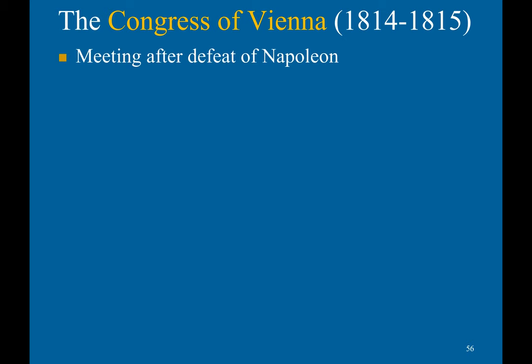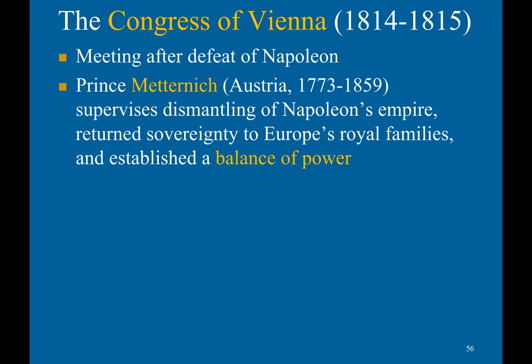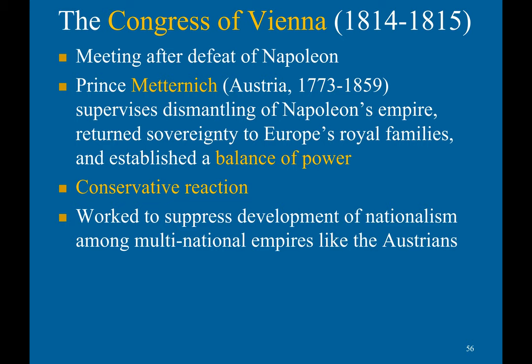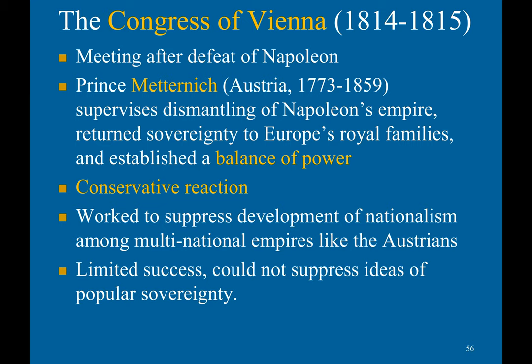The Congress of Vienna was a meeting held after the defeat of Napoleon. It was convened by Prince Metternich, who supervised the dismantling of Napoleon's empire, returned sovereignty to Europe's royal families, and established a balance of power. This was a conservative reaction that worked to suppress the development of nationalism among multinational empires like the Austro-Hungarian Empire that Metternich was part of. Unfortunately, it had limited success as it could not suppress the ideas of popular sovereignty.